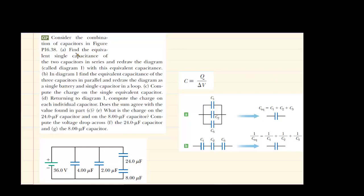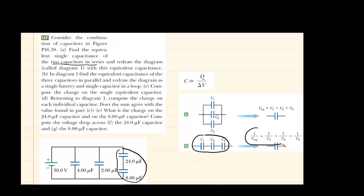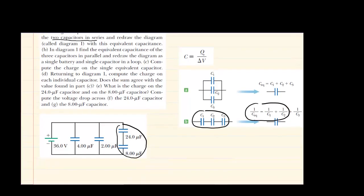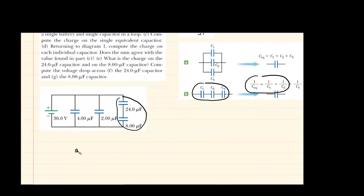In part A they are asking us to find the equivalent single capacitance of the two capacitors in series and then to redraw the diagram. If we look at the two capacitors in series, they would be referring to these two capacitors right here. Over on the side we have drawn a schematic of series capacitors and an equation that allows us to calculate the equivalent capacitance of a series arrangement. For two capacitors we would be using this equation right here.